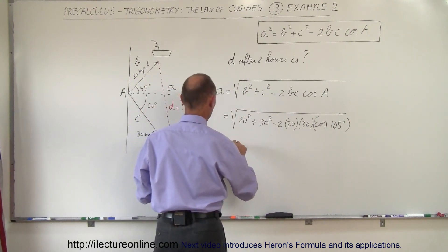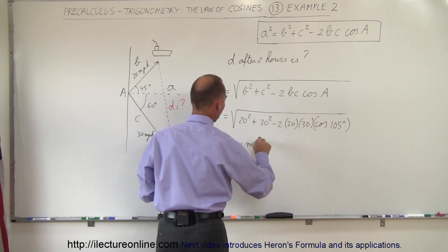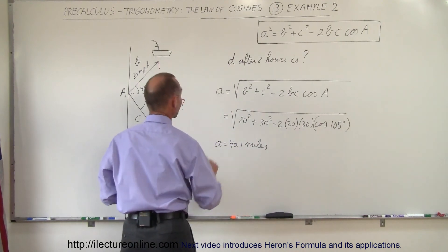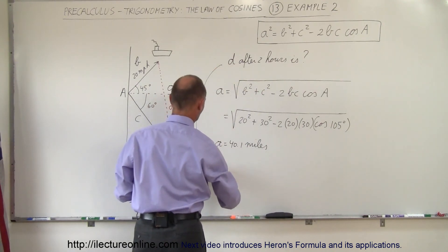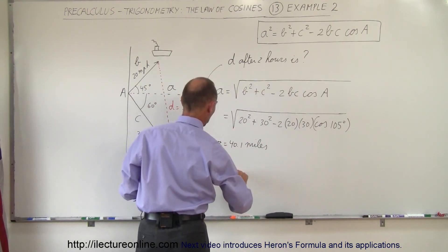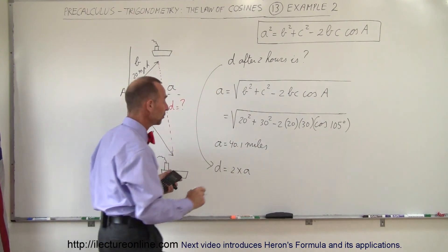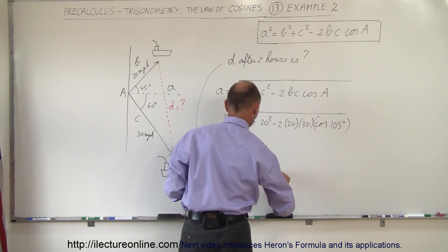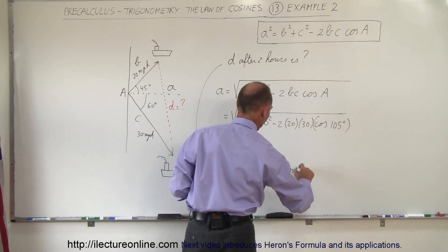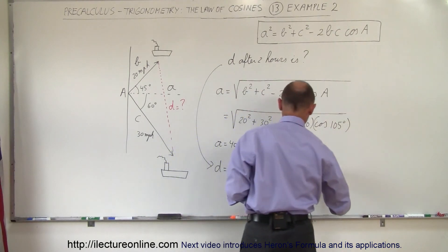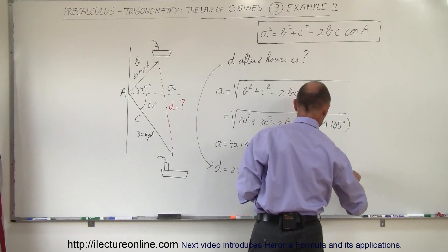So a would be 40.1 miles, and of course d after two hours, so d equals 2 times a, because we want it after two hours, which is equal to 2 times 40.1 miles, or after two hours it'll be at a distance of 80.2 miles apart.